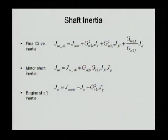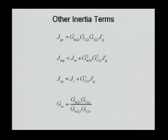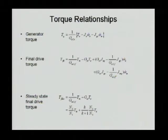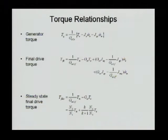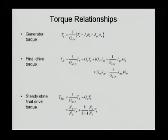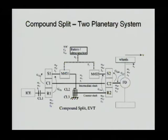Putting them together, you can get the other inertia terms and develop the relationships of the dynamic torque and speed. You can write down the steady-state equations when you eliminate the dynamic terms of the speed derivatives — those can be easily derived.